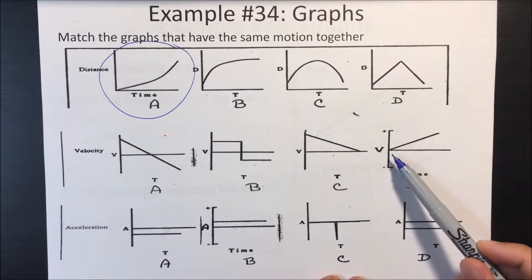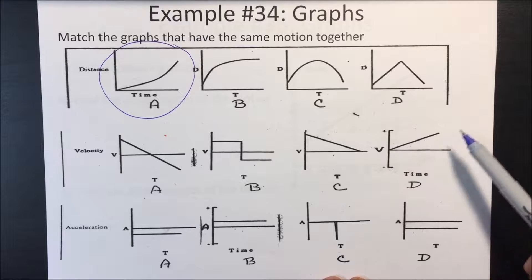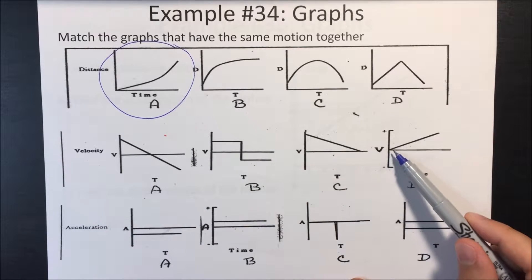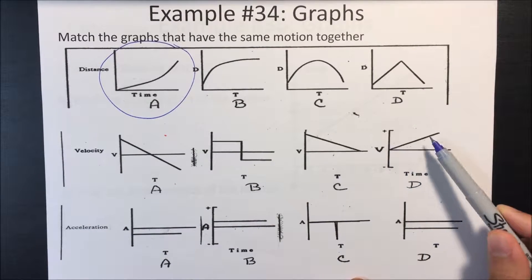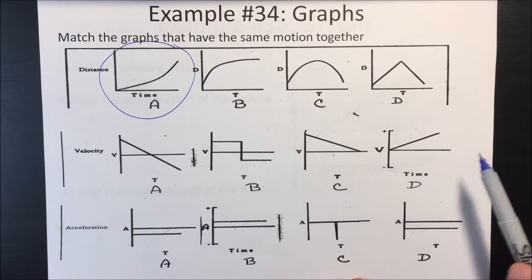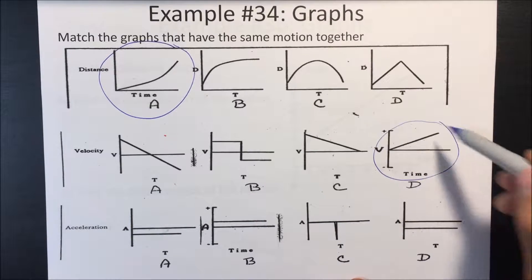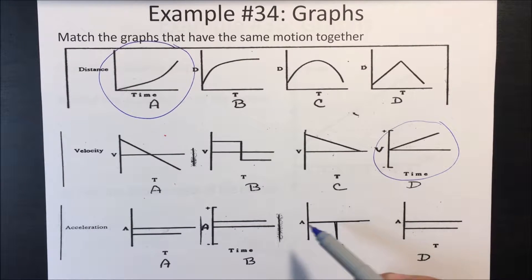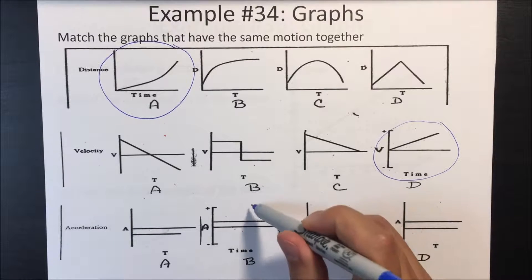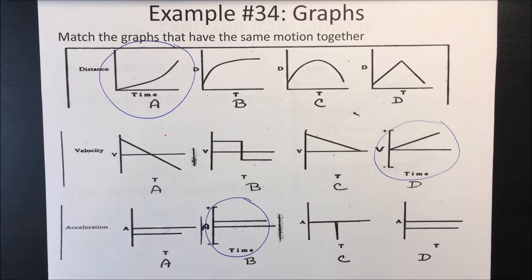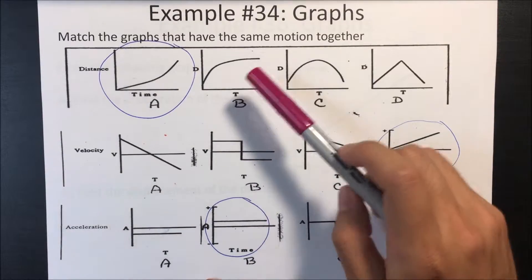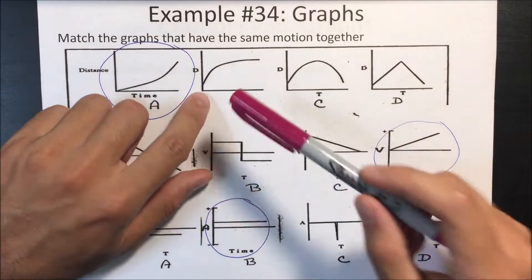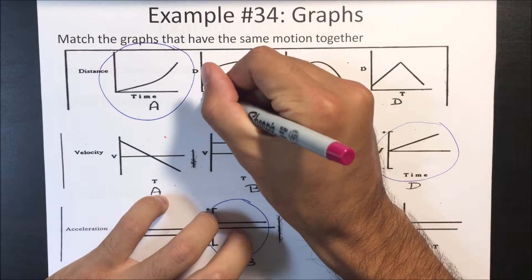Since it's accelerating in the positive direction, it's getting faster and faster and faster. So on the velocity versus time graph, it's getting faster and faster over time. And that also means it has a constant acceleration, which is B. All right, let's look at the next one.